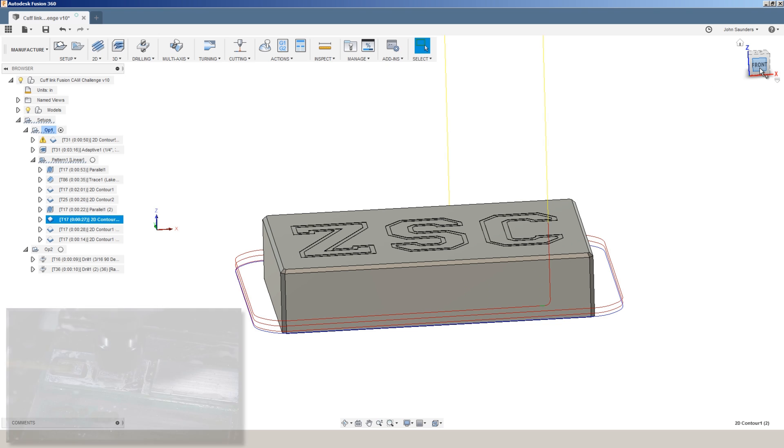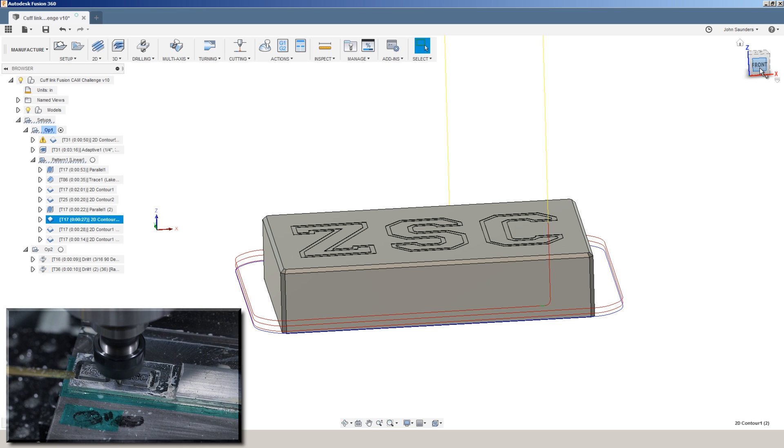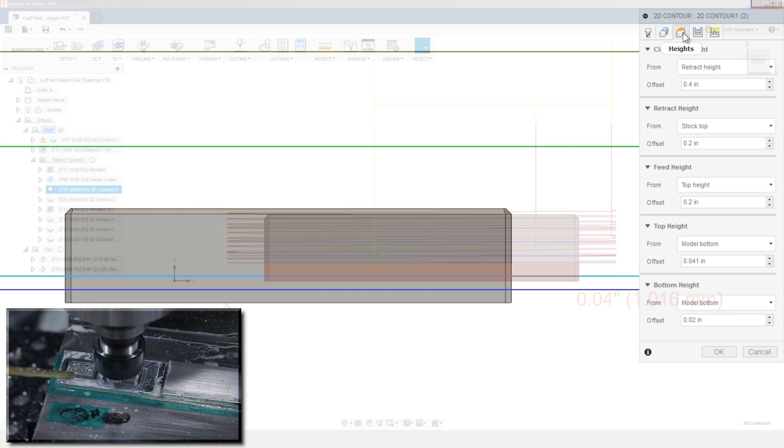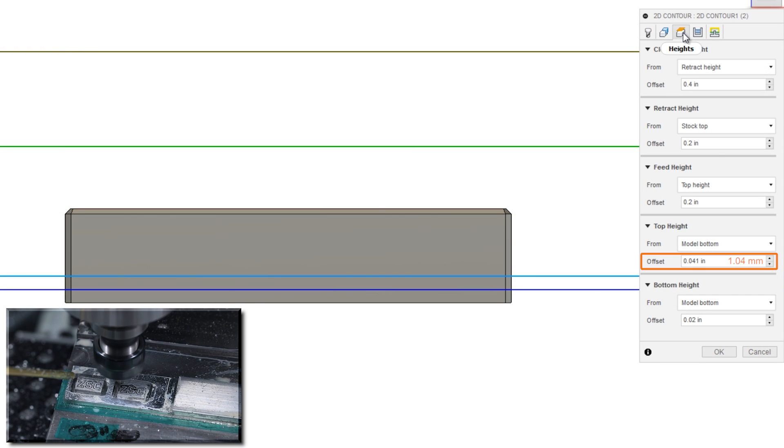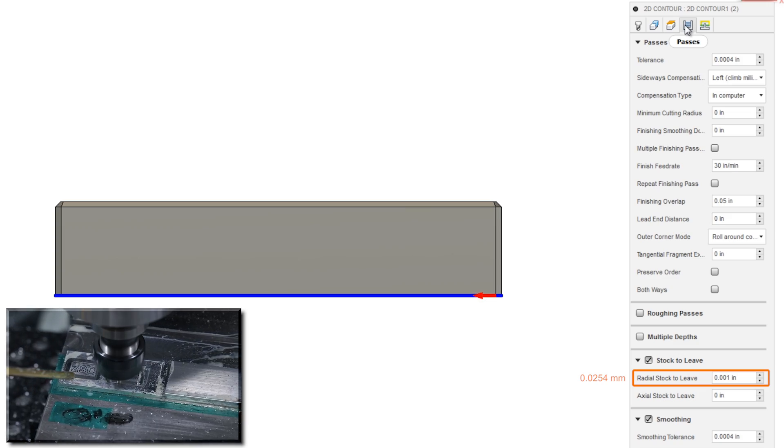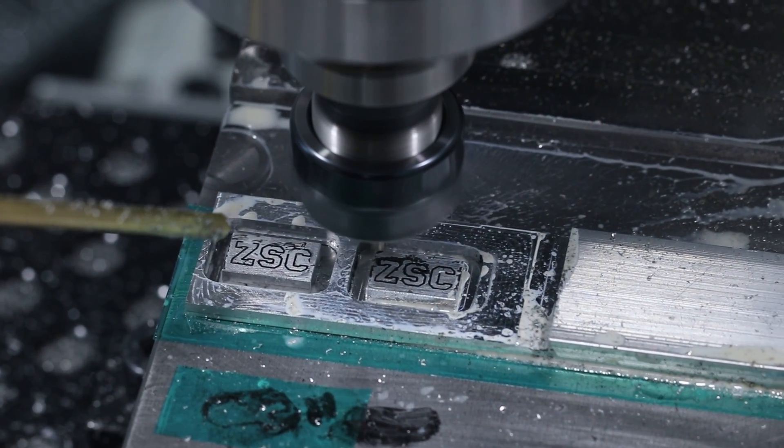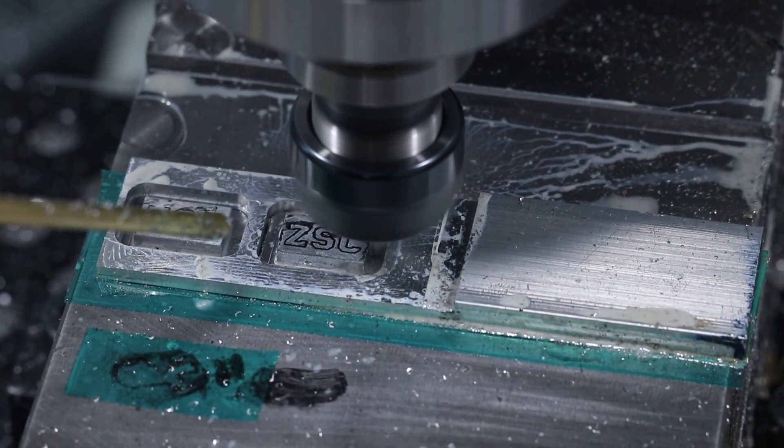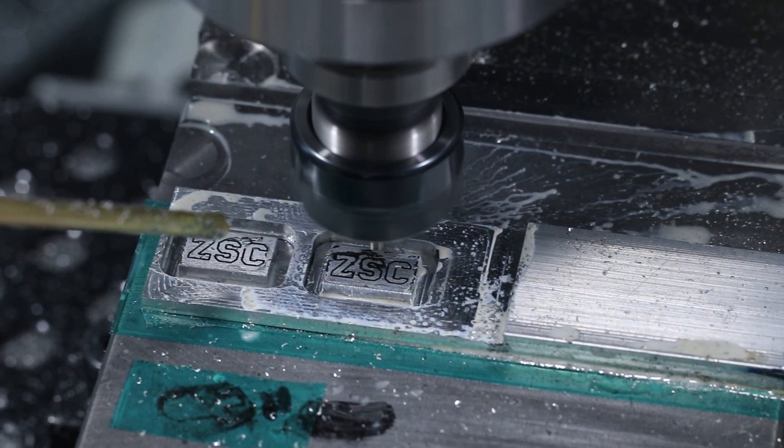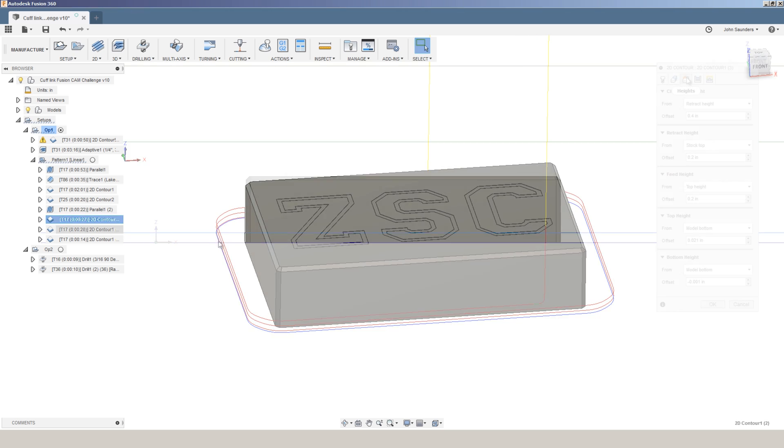And then we're going to start whittling down our part. So remember we left off with 40 thousandths of an inch stock to leave. Now we're going to ramp down starting at 41 thousandths of an inch going down to 20 thousandths of an inch, only leaving one thou radial stock. 20 thousandths of an inch is actually still a fair amount of material, but we're starting to get to that point where we've got to be a little bit more careful about how we have tools contacting our part, particularly on radial loads.